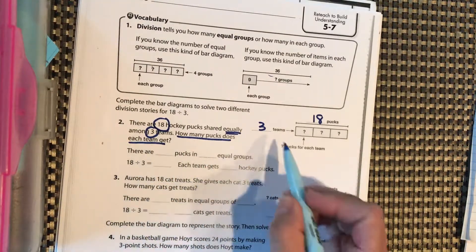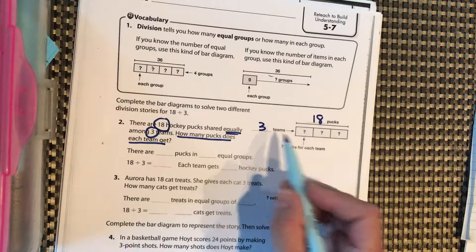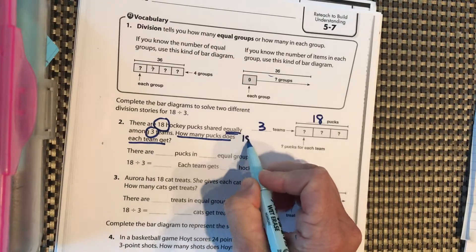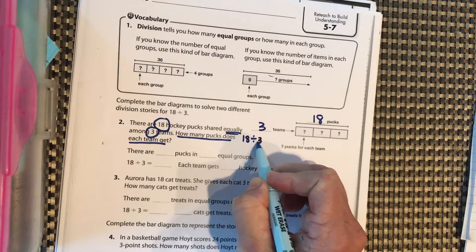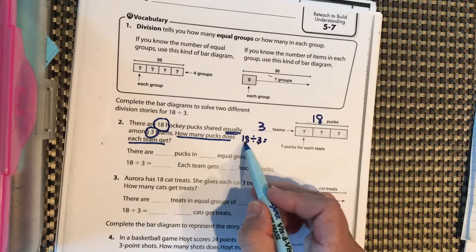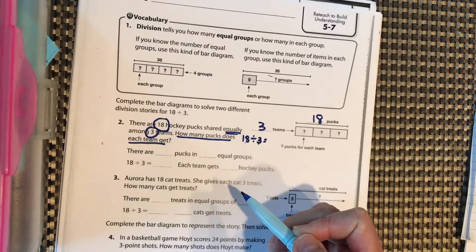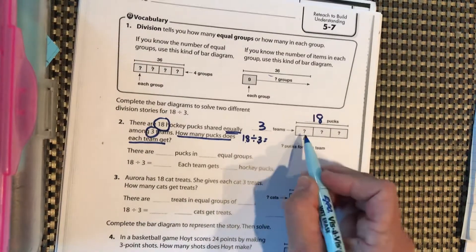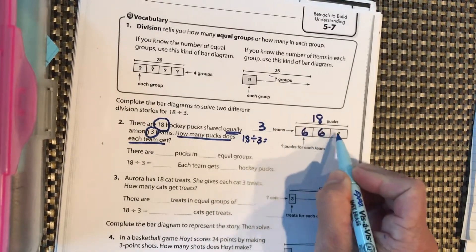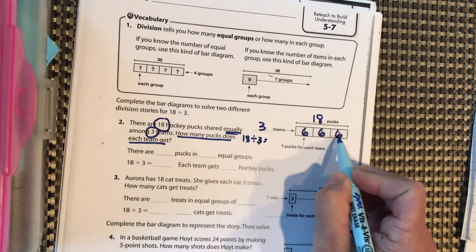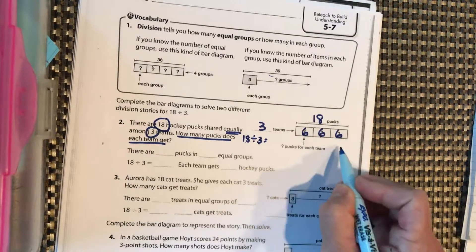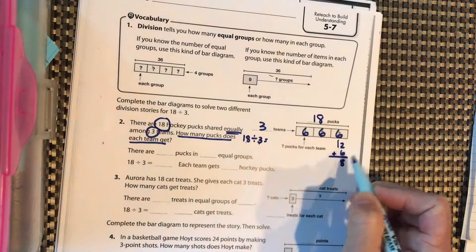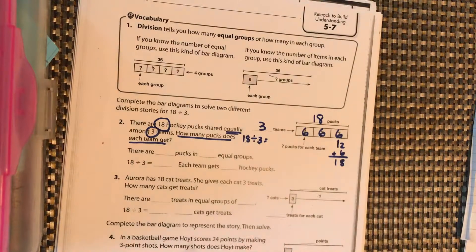So there are three teams. We want to do basically 18 divided into groups of three. What number times three equals 18? Pause it and think about it. What number times three equals 18? So we should come up with six. Six plus six plus six. Six plus six is 12 plus another six. Don't regroup. There we go. Equals 18.